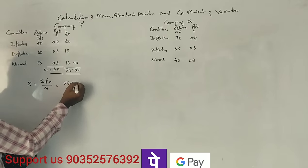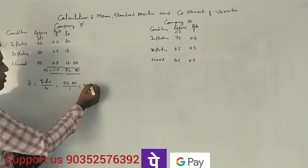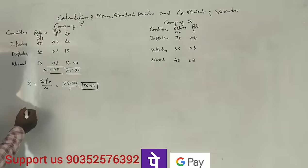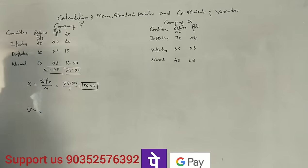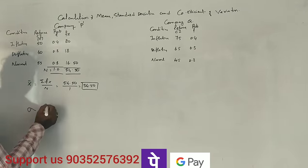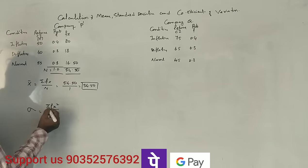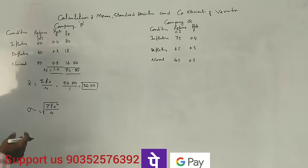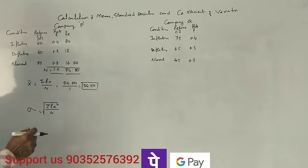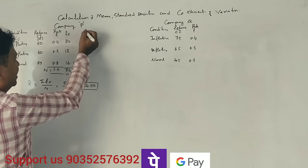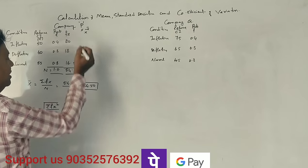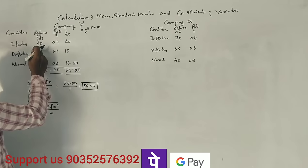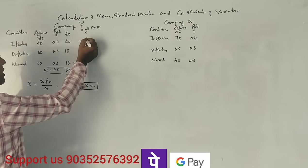The mean is equal to summation fx divided by n, which gives 54.5 divided by 1, so the mean equals 54.5. Now we move to calculating the standard deviation. The standard deviation equals the square root of summation fx squared divided by n. We first find small x, which is x minus x-mean.